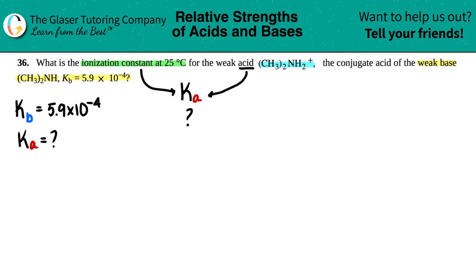And there is, the formula is this one: Kw equals Ka times Kb. But the thing here is that if you want to use this formula, the Ka and the Kb value have to be conjugates of each other.